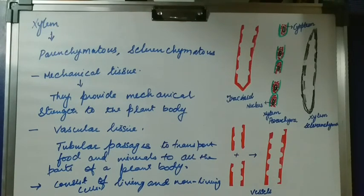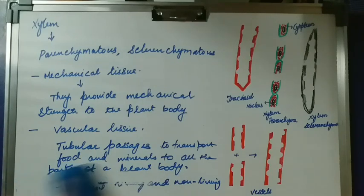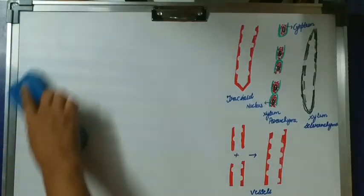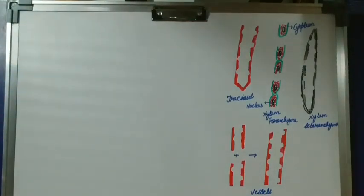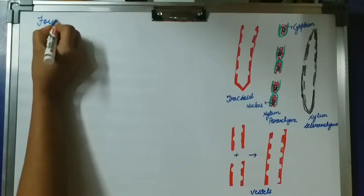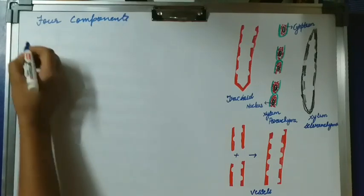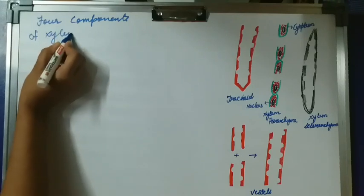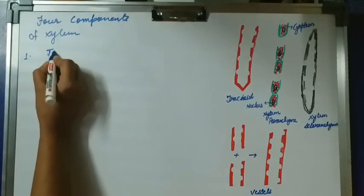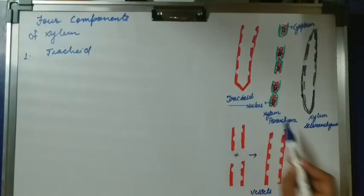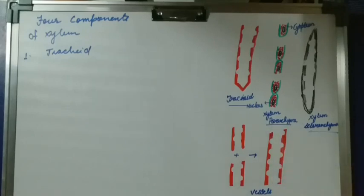Xylem has four components or elements. The four components are: tracheid, xylem parenchyma, xylem sclerenchyma, and vessels. We will see them one by one. The first one is the tracheid.